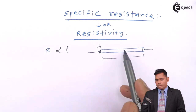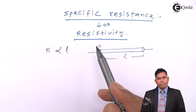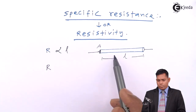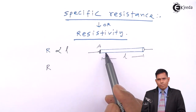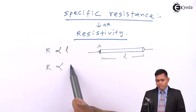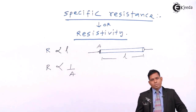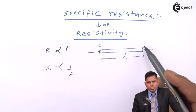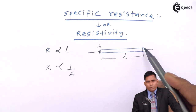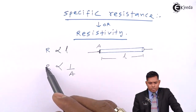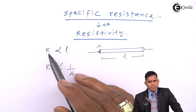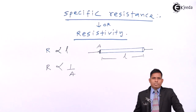That means if I take a longer length, the resistance will also be higher. It is also found that the resistance of this conductor is inversely proportional to its area of cross-section. That means if I consider a thicker wire or conductor, its resistance will be less. Greater length implies greater resistance; thicker wire means less resistance.